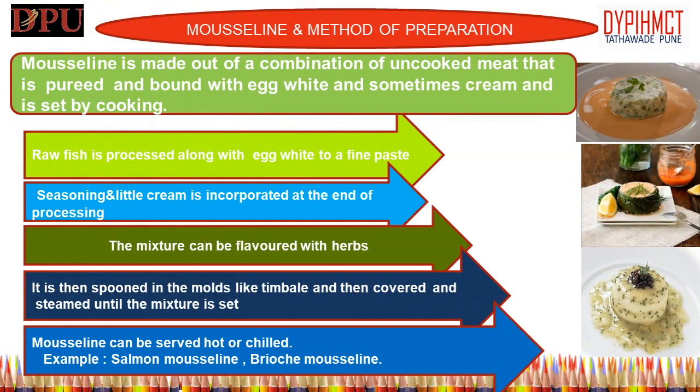Mousseline. Mousseline is a type of fluffy consistency similar to mousse, often made from a combination of uncooked meat — particularly chicken or fish — pureed and bound with egg white and sometimes cream, set by cooking. Mousseline most often starts with a base of paste, traditionally seafood paste from fish like salmon, trout, sole, etc., or from shellfish like crab, shrimp, prawn, lobster, etc. Although other meats like ham, chicken, veal, pork, and feathered game may be used as well.